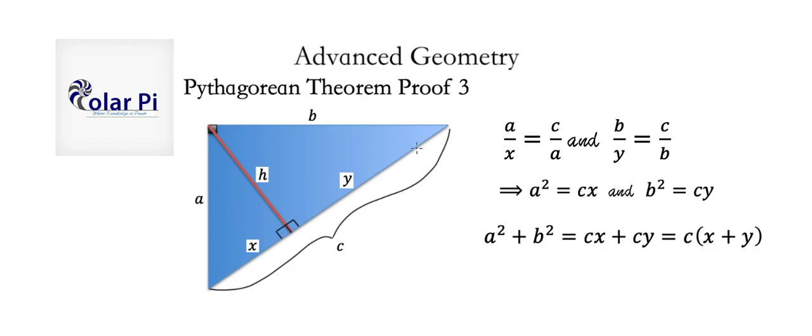But wait, x plus y is equal to c, right? And so, we have a squared plus b squared is equal to c squared.